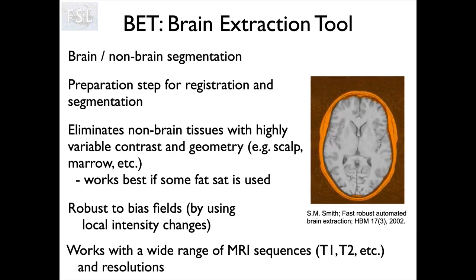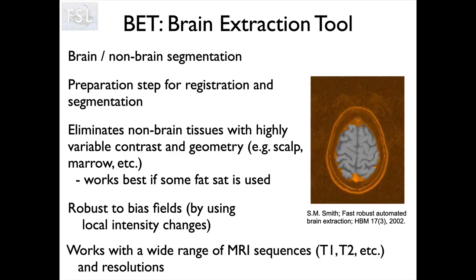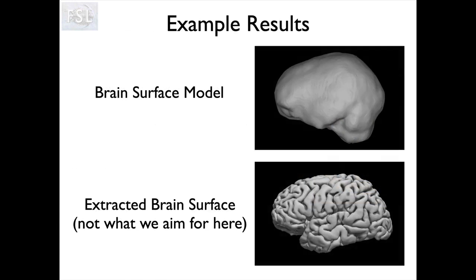BET is a fairly straightforward tool; it can take images of different modalities, it's quite fast, and it works very generally. It doesn't try to get into the deep folds of the brain. What you can see on the bottom is a cortical surface extraction, which would be done with something like FreeSurfer — that's a very detailed, complicated process and not what we're aiming to do here. We're just aiming to get a simple separation where the bulk of the non-brain material is outside that surface, while inside are the brain and some other materials such as CSF, membranes, and blood vessels. We're not trying to be super accurate; we're trying to get rid of the bulk of the non-brain material.